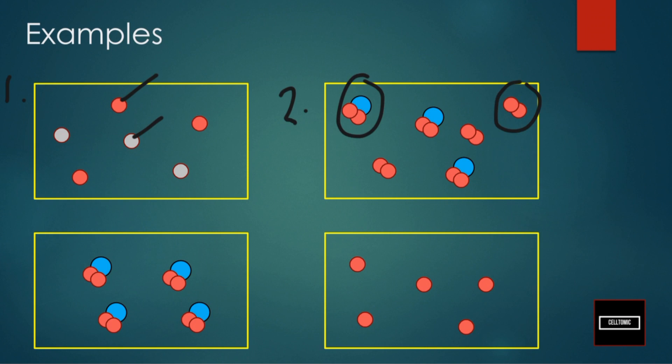And for example, one is a mixture of elements. For the third box, we have just one compound. And the fourth box, we have just one element.